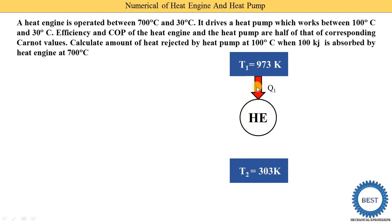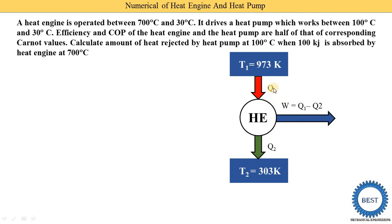In the heat engine, we supply heat Q1, and Q2 is rejected to the sink. The work produced is W = Q1 minus Q2. This work done produced by the heat engine is used to drive a heat pump, which operates between 100 degree centigrade and 30 degree centigrade.